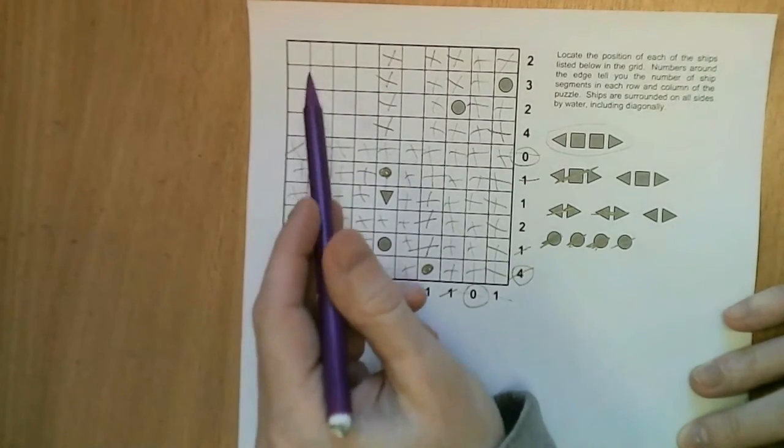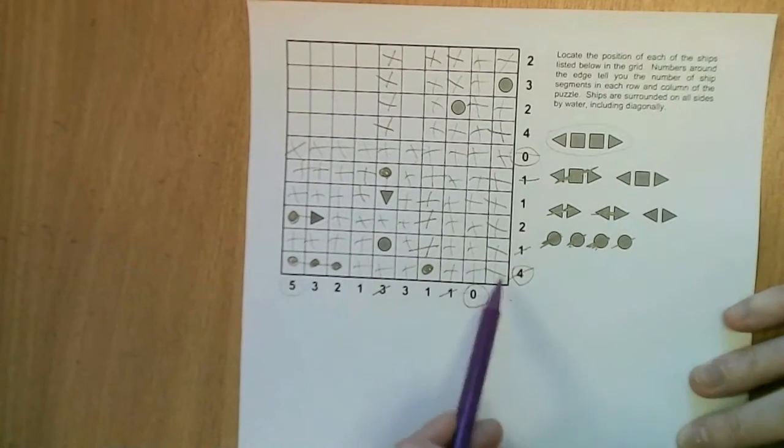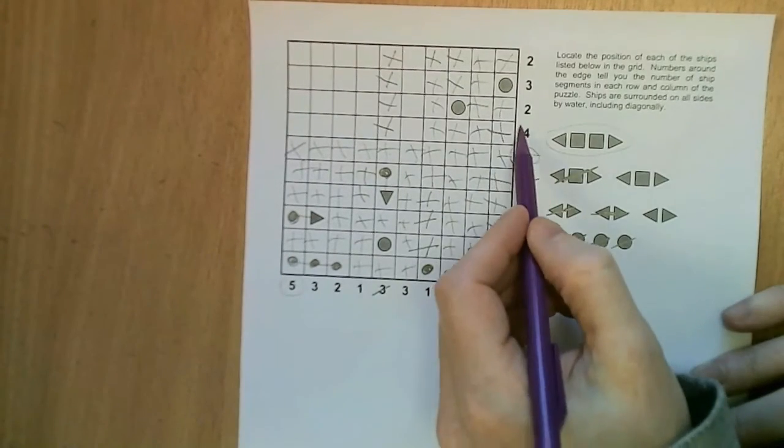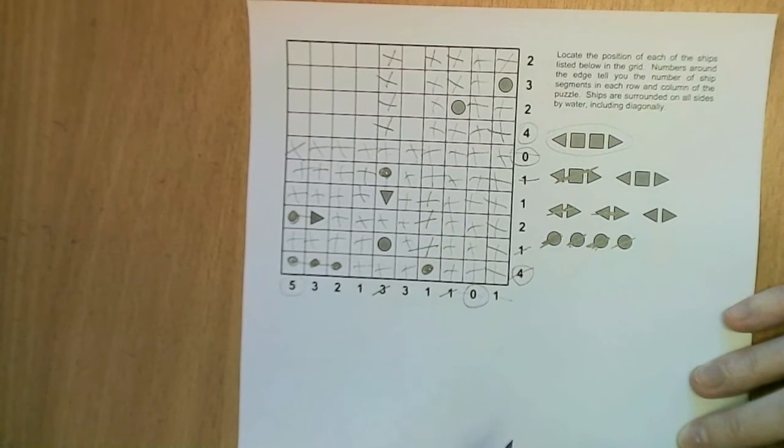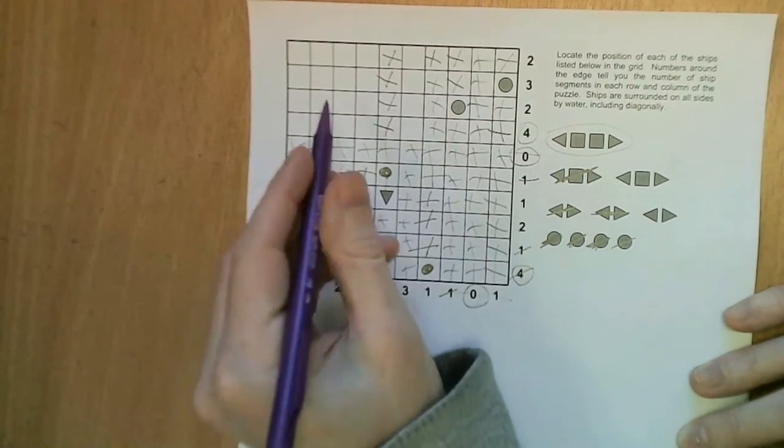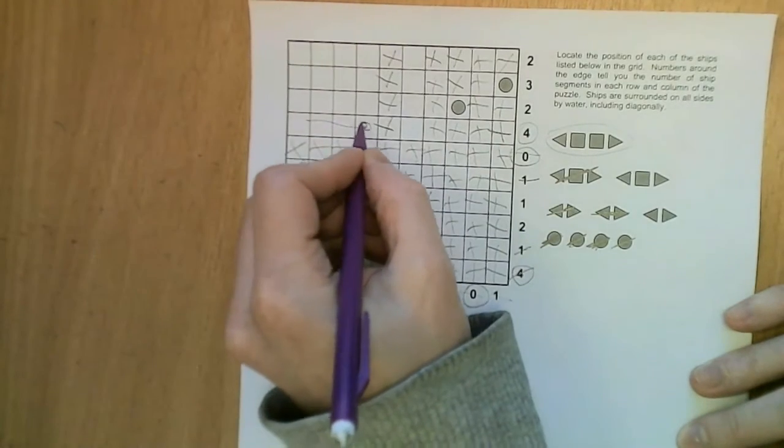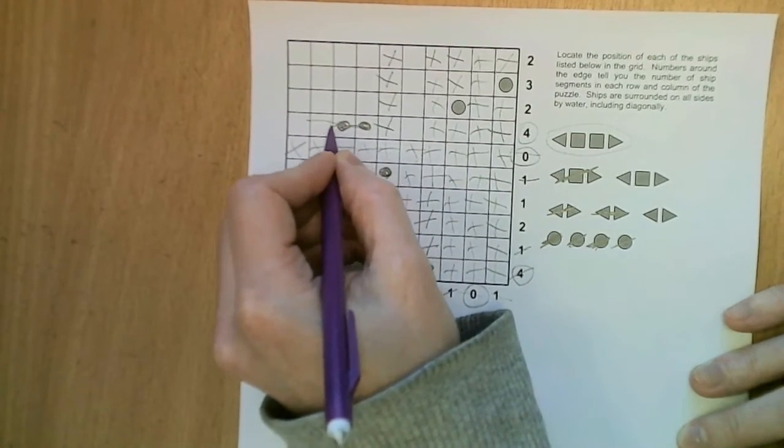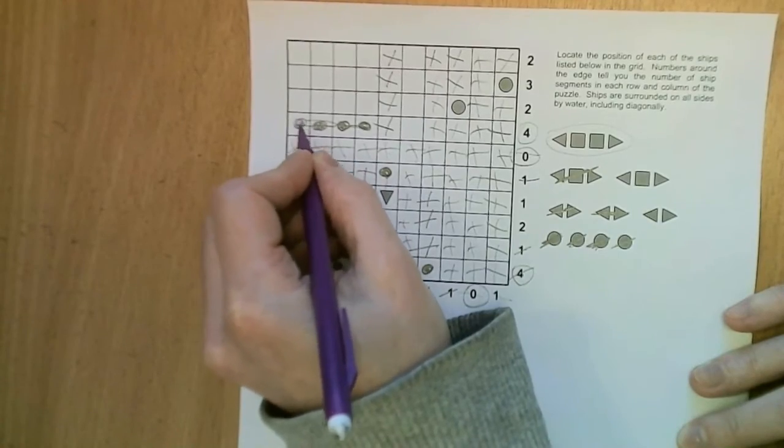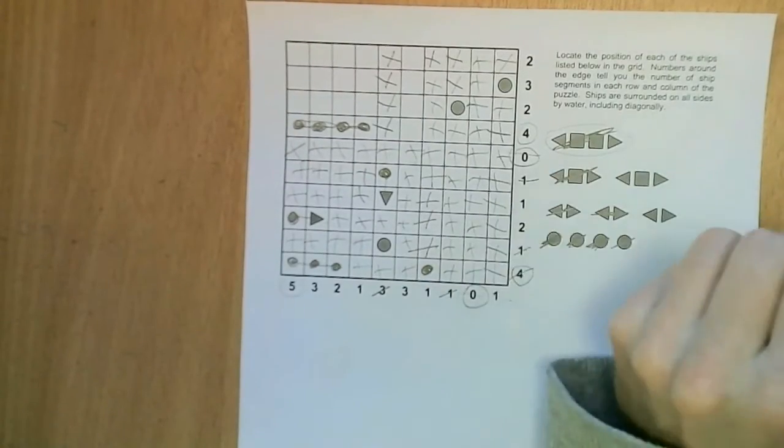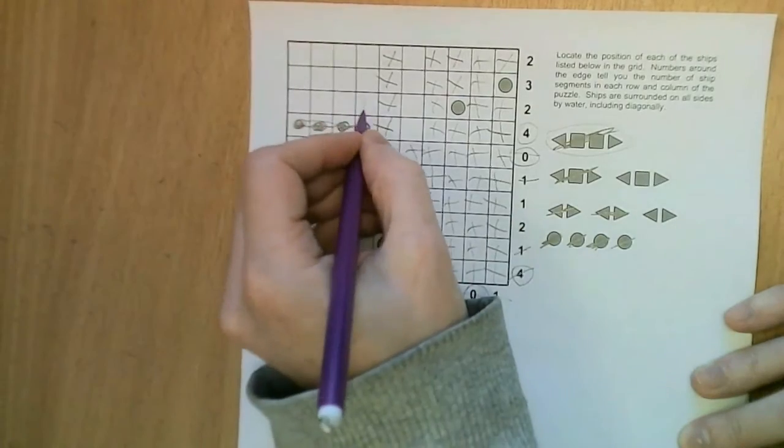And looking across the rows the only one with a big enough number is the four here, and therefore we know that it must occupy these four squares and we can mark it in. So let's do that, and so our battleship is placed, so we only have two ships left to place now.